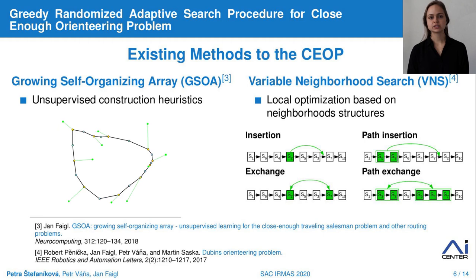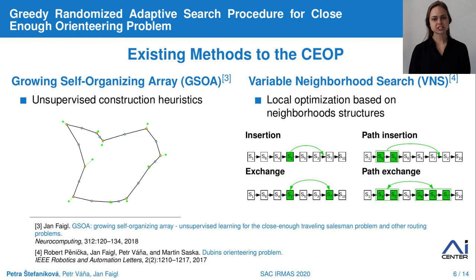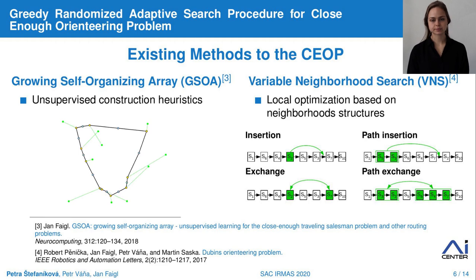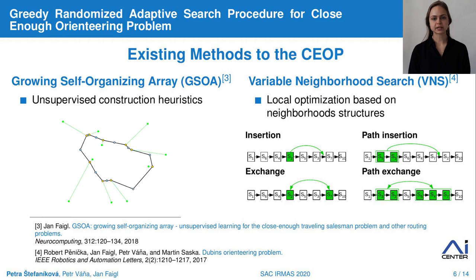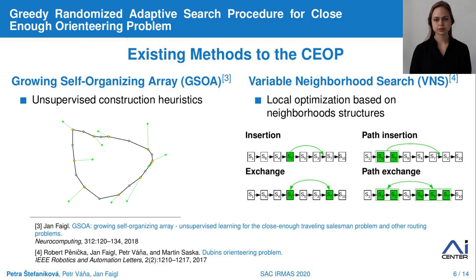In contrast, Variable Neighborhood Search (VNS) is an any-time algorithm which iteratively tries to improve the current solution using variable neighborhood structures. In each iteration, the algorithm consists of two phases. The first is a shake procedure to escape the local extreme by random use of a single-point insertion or exchange operator. Secondly, the local search procedure tries to improve the current solution by using path operators.